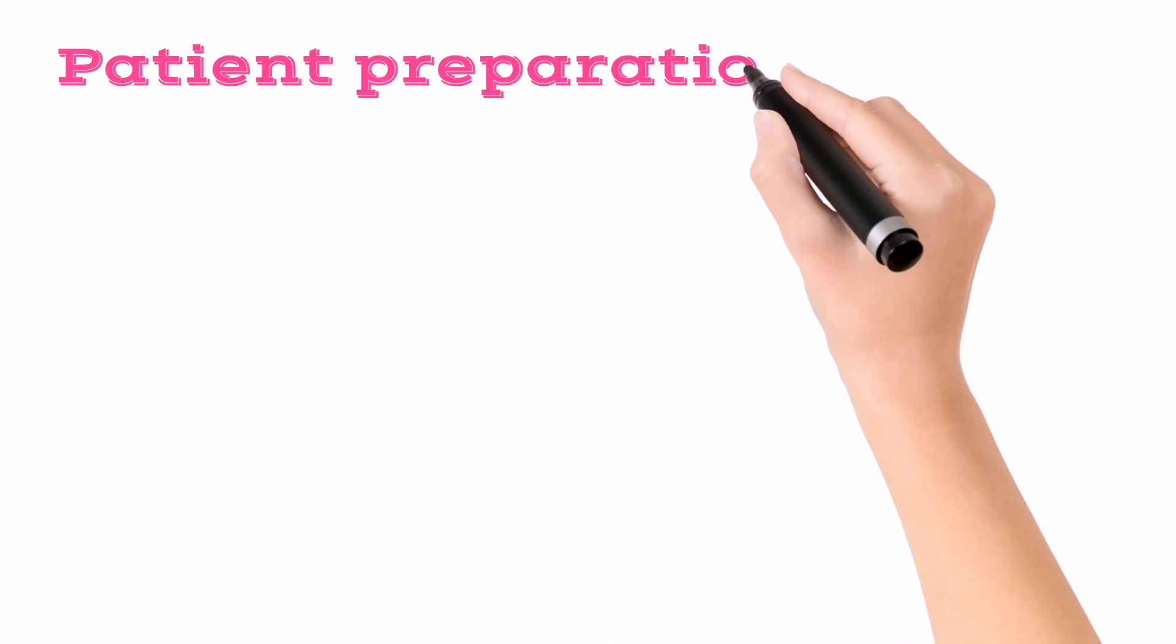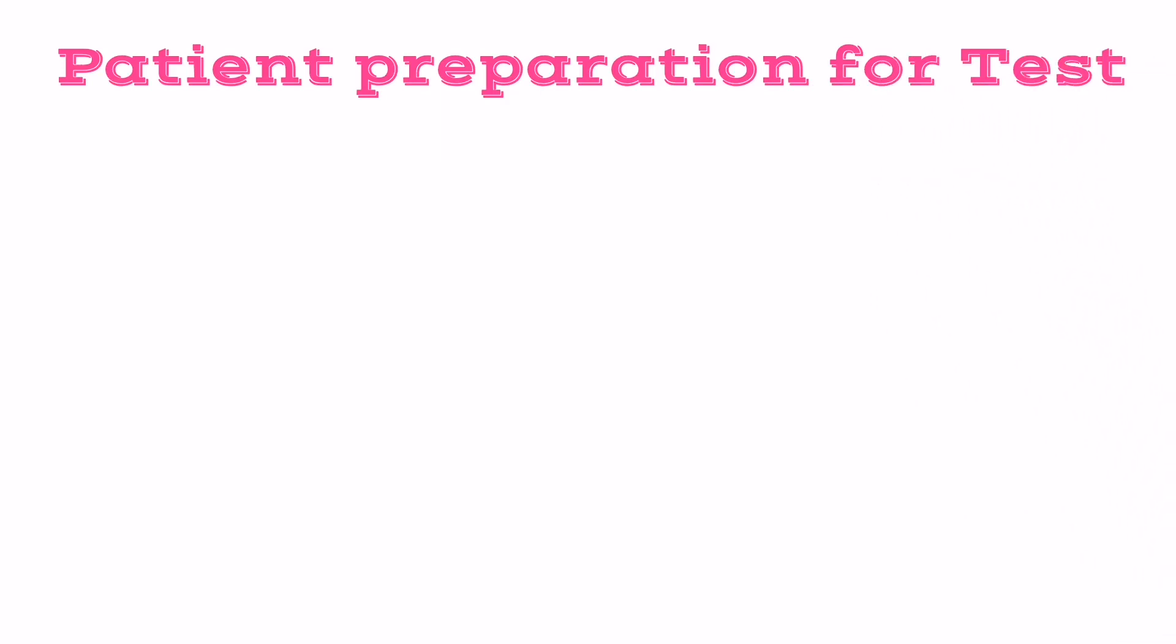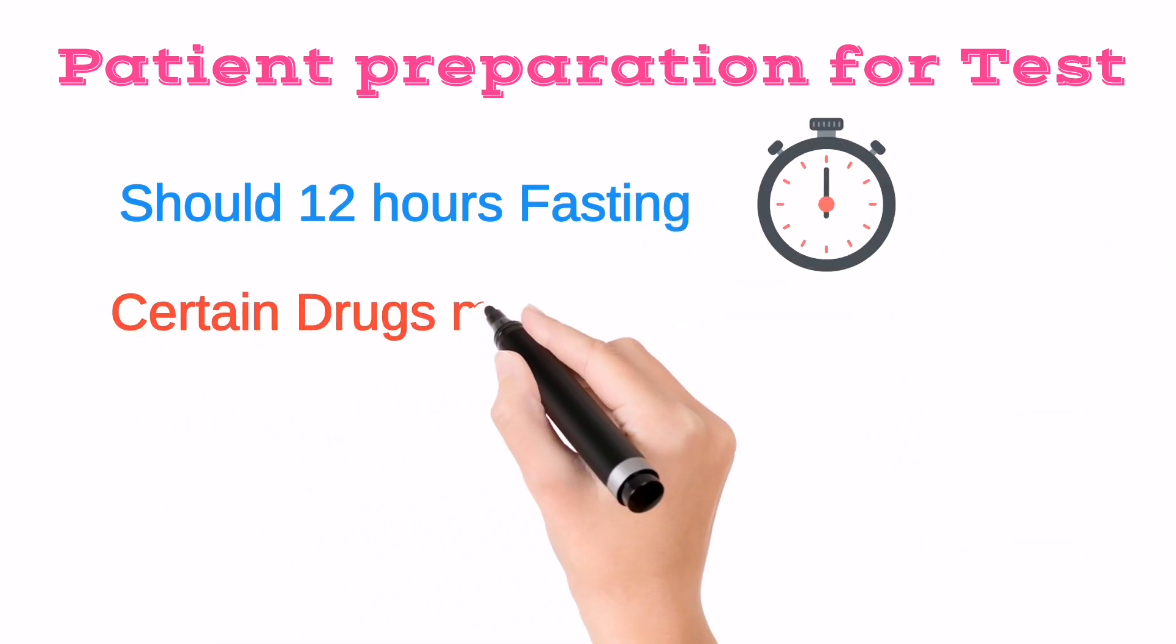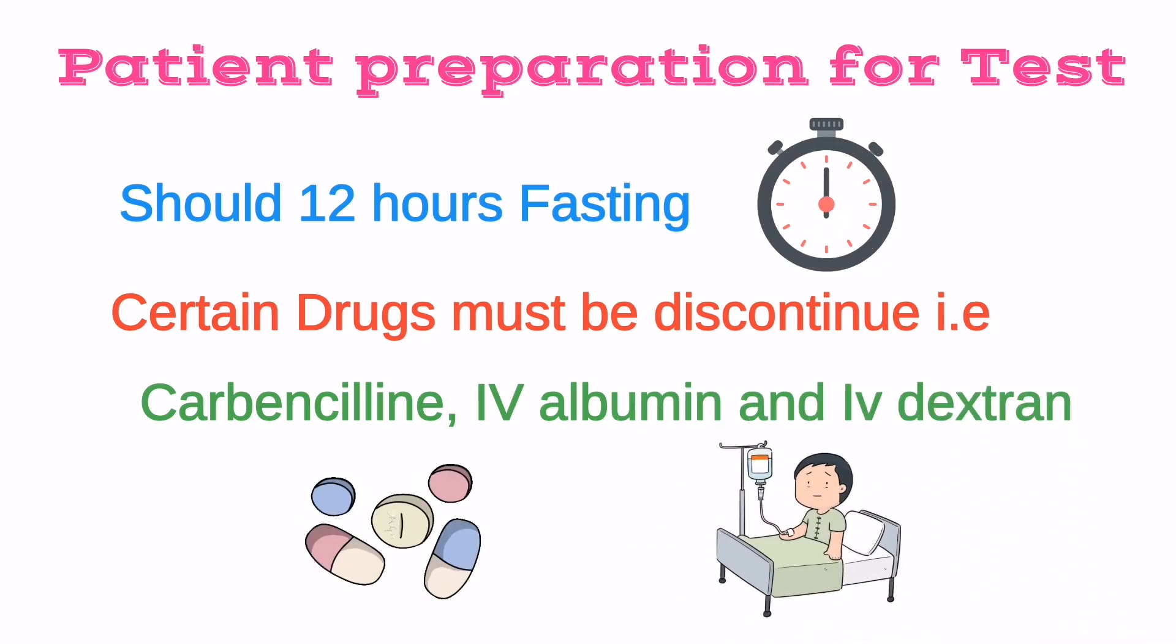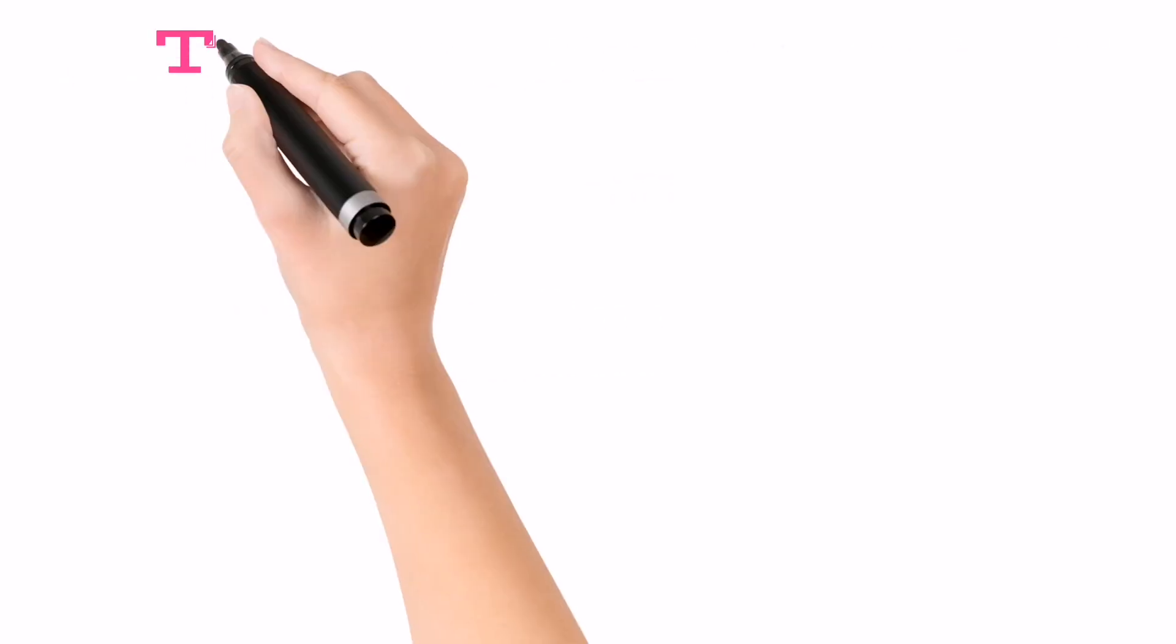Now if a patient has to do USG test, what should he or she do? He or she must be 12 hours fasting, and certain drugs like carbamazepine, IV albumin, and IV dextran must be discontinued.